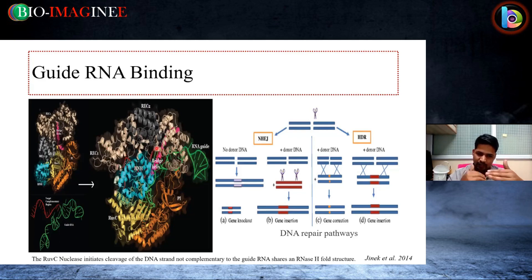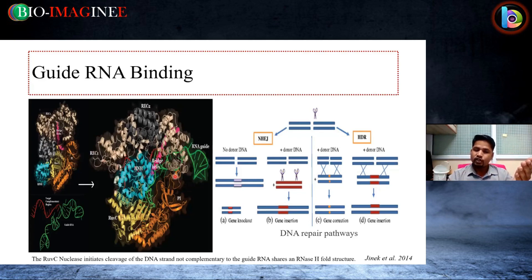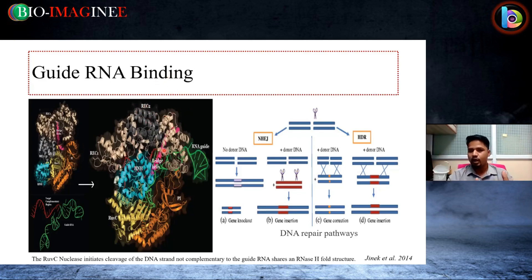To repeat: we have a target complementary region and have designed the guide RNA. The guide RNA binds with the target complementary region. At that time, RuvC1 and RuvC2 activate Cas9 because there is a foreign invader. RuvC1 and RuvC2 activate and RNase H initiates the cleavage process; then Cas9 cleaves at the PAM site. If RuvC1 activity is eliminated, Cas9 nuclease will not work. If RuvC2 is mutated or eliminated, Cas9 may or may not work.